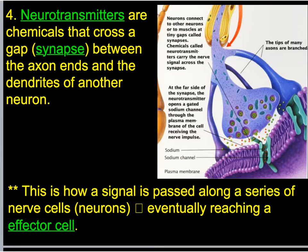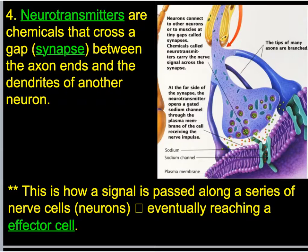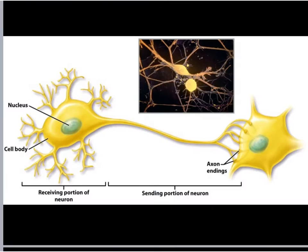Neurotransmitters are the chemicals that cross the gap — the synapse — between the axon endings of one neuron and the dendrites of the next neuron. Some of them have names you might have heard of, like dopamine. These very powerful chemicals travel across the gap and allow the electrical signal to pass from one neuron to the next. This is how the signal travels along a series of neurons: electrical, then chemical, then electrical, then chemical — eventually getting to our effector cells, which are either muscle cells or gland cells.